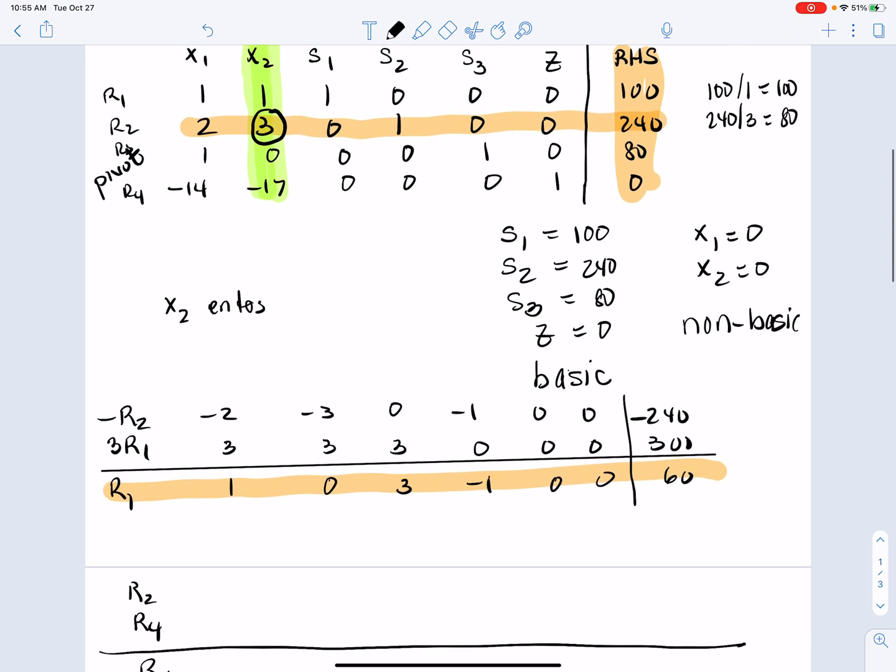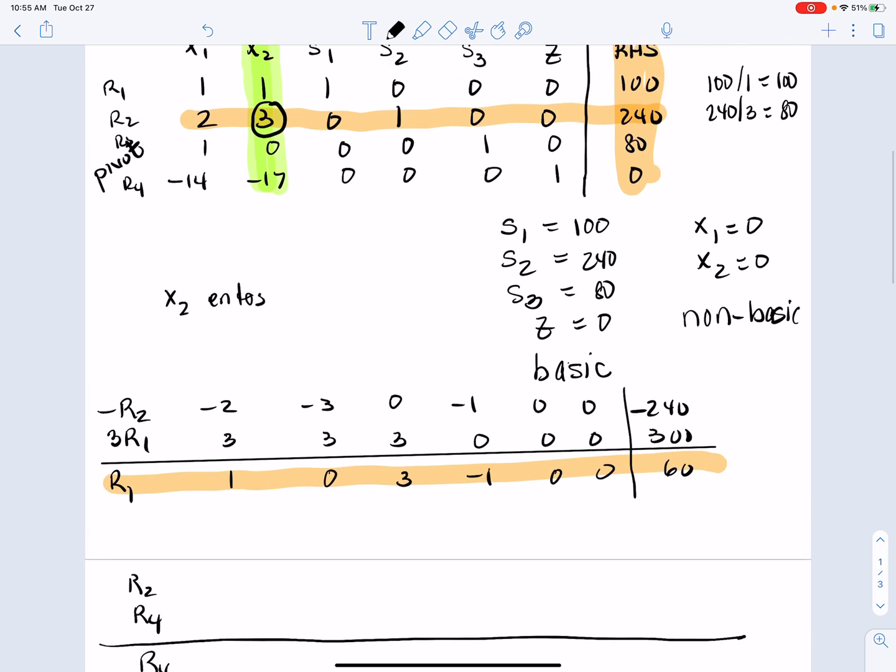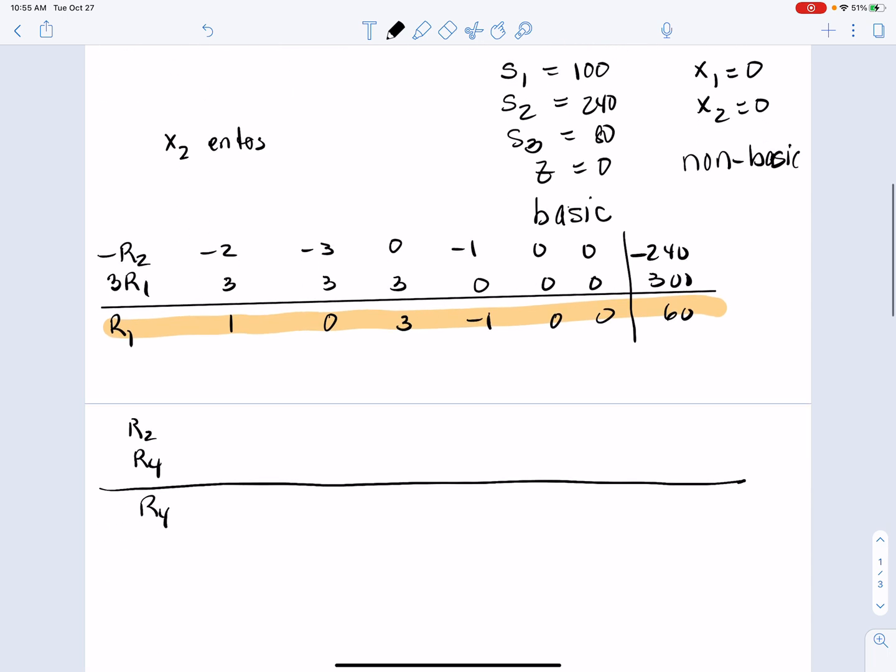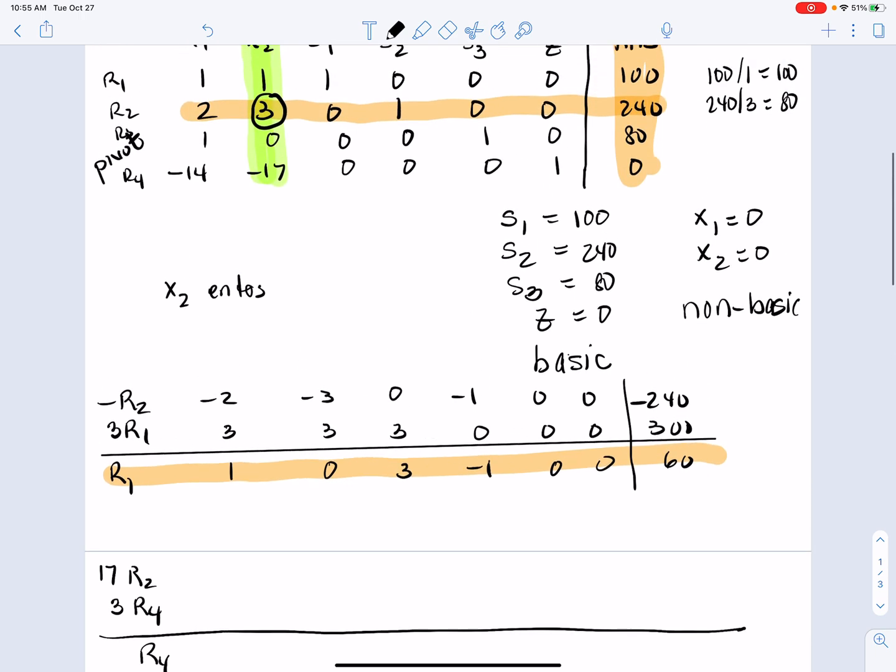So how's that going to happen? Well, notice I'm combining a positive and a negative, so I don't need to worry about negatives here. Let's say the common denominator between 3 and 17 is, well, 51. So I'm going to have to take 17r2 and add 3r4 to get a new r4.